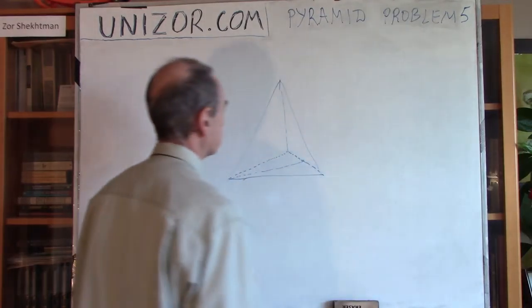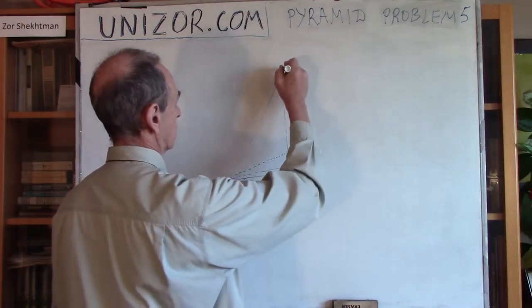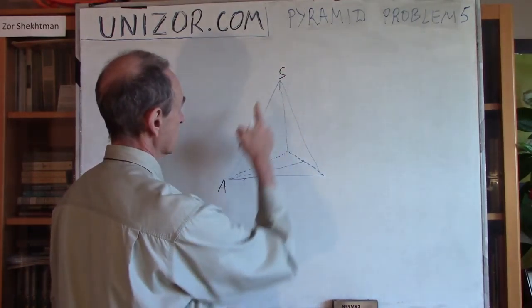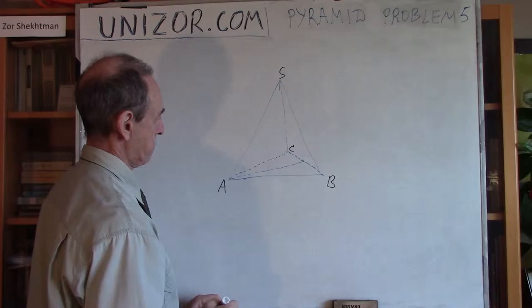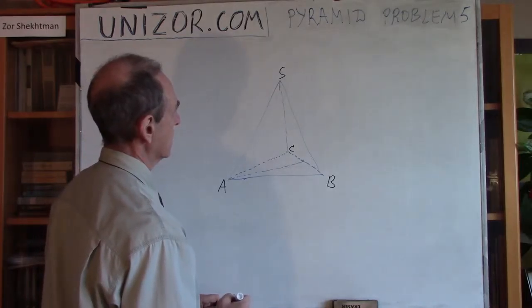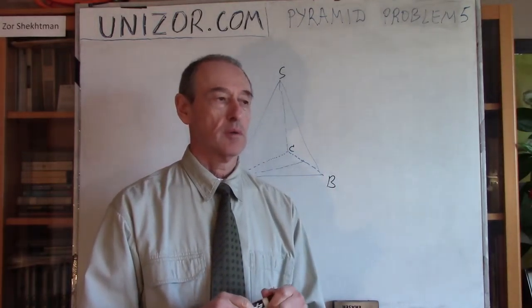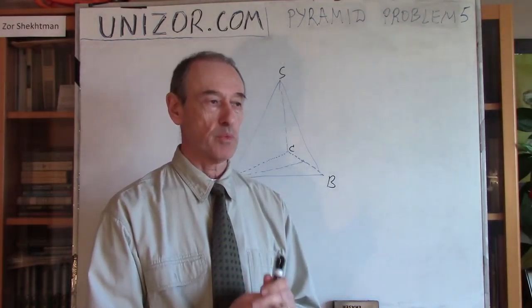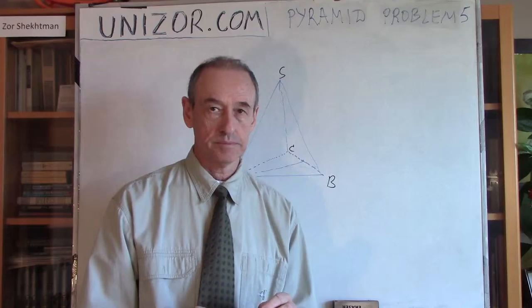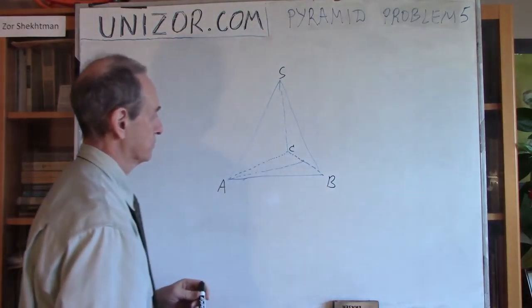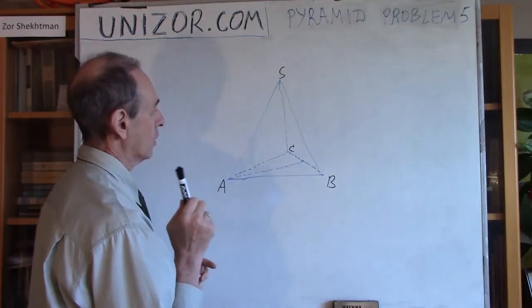Let's say we have a regular triangular pyramid. S is the apex and ABC are the vertices at the base. Now, it's a regular pyramid, which means basically two things. Number one, the base is an equilateral triangle. So all sides are equal - AB, BC, and AC.